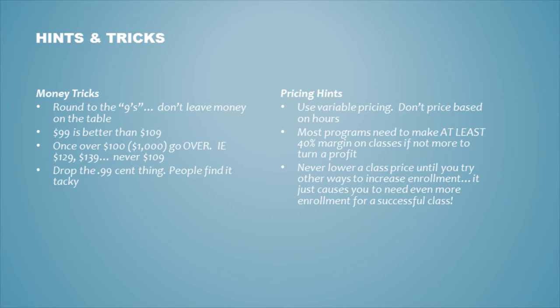Use variable pricing — if the class will support it, make the price higher. Don't base prices just on the number of hours. Remember that most programs need to make a 40% margin, if not more, to turn a profit. Look at your margin on classes after the end of each quarter. If you're not making enough margin because enrollment is low, you may need to make adjustments. And finally, never lower a class price until you try other ways to increase enrollment — lowering the price just means you need more enrollment to meet your go-no-go and break-even numbers.